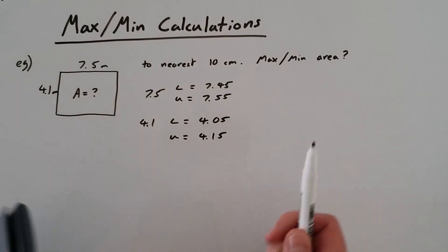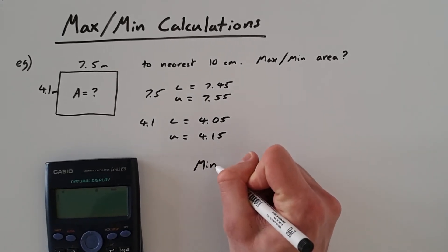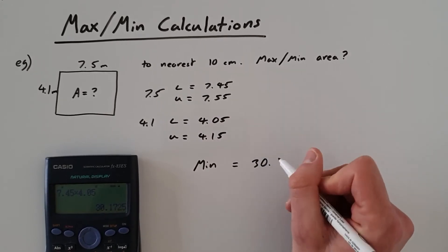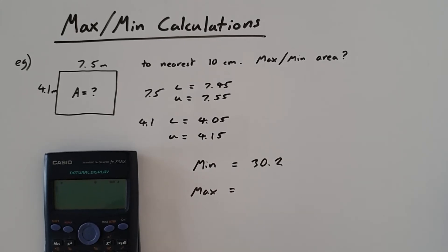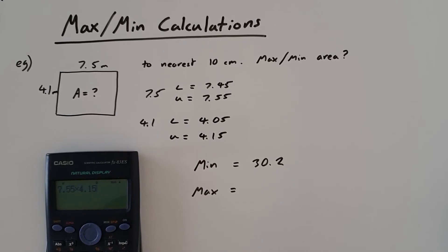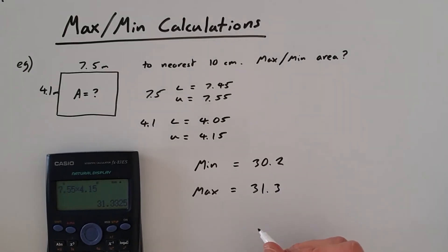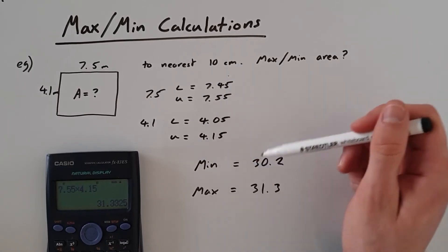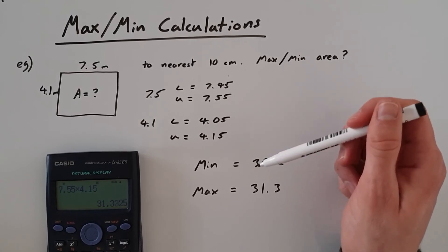To work out the minimum area we take the lower bounds and multiply them; for the maximum area we take the upper bounds and multiply them. So the minimum value is 7.45 multiplied by 4.05, and the maximum value is 7.55 multiplied by 4.15. You take the upper and lower bounds of each number individually, then perform the equation — in this case multiplication — using the lowest or highest values to get the minimum or maximum.